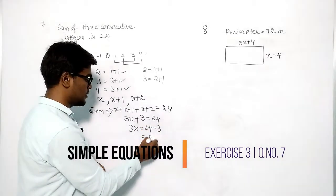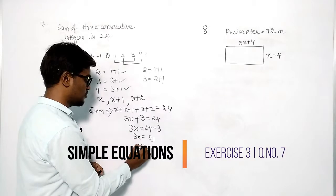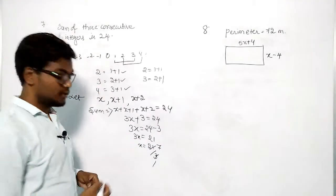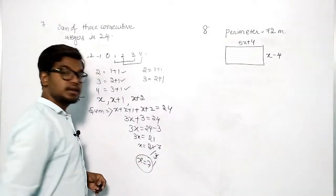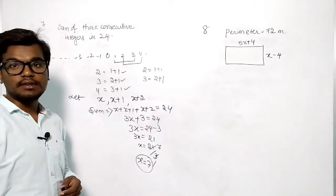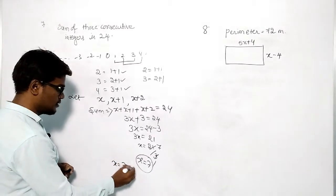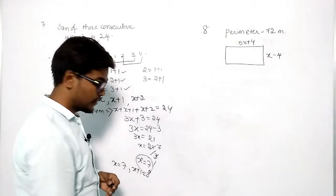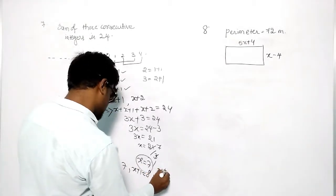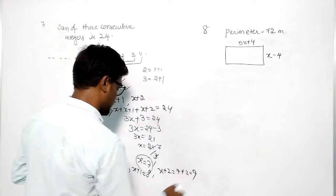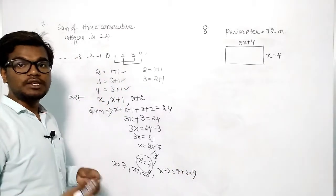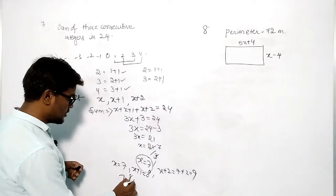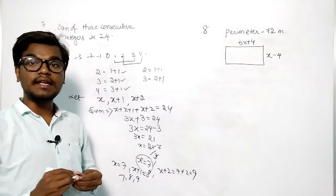So 3x equals 24 minus 3, which is 21. Therefore x equals 21 divided by 3, which is 7. The three consecutive integers are: x equals 7, x plus 1 equals 8, and x plus 2 equals 9. So the three consecutive integers are 7, 8, and 9.